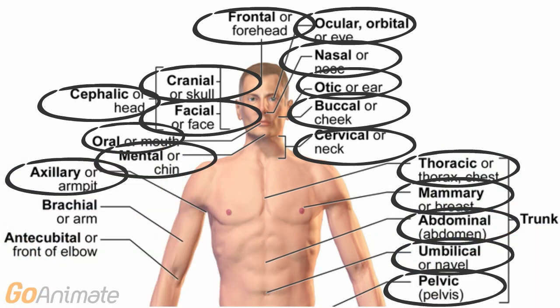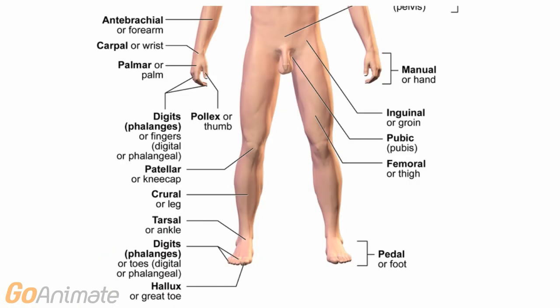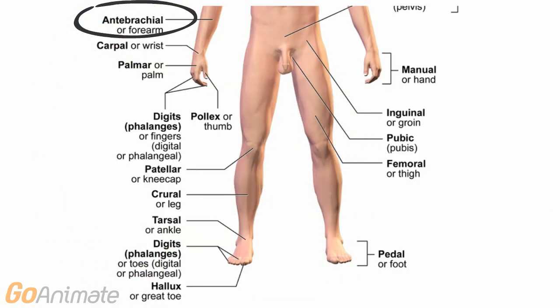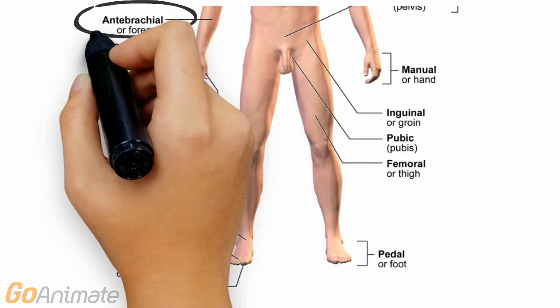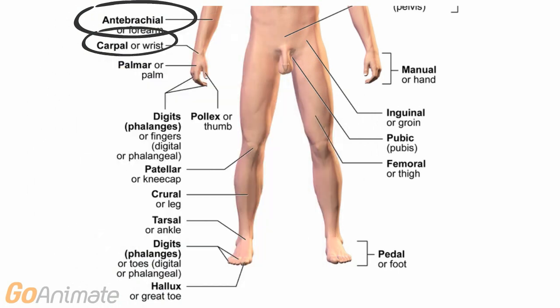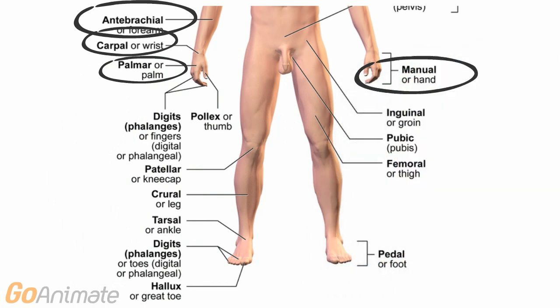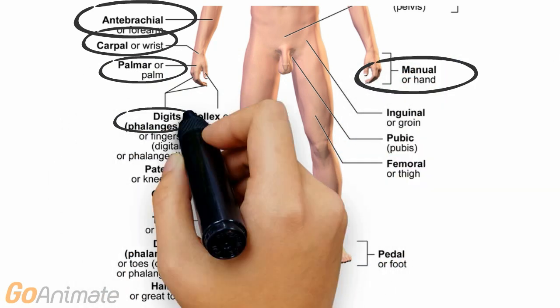The arm includes the axillary, brachial and antecubital or elbow regions. The forearm is called the antebrachial region. The wrist and hand include the carpals, palmar, pollux and digits. The hand itself is called the manus or manual region.